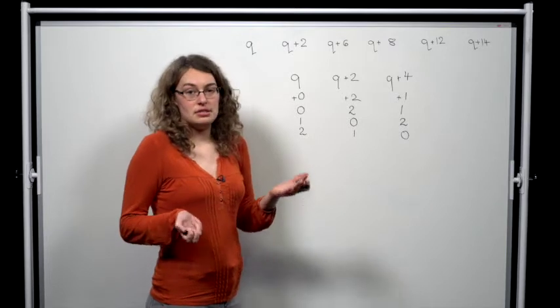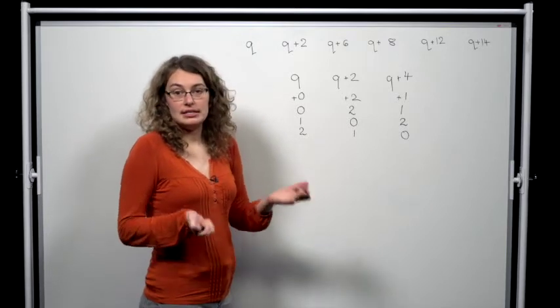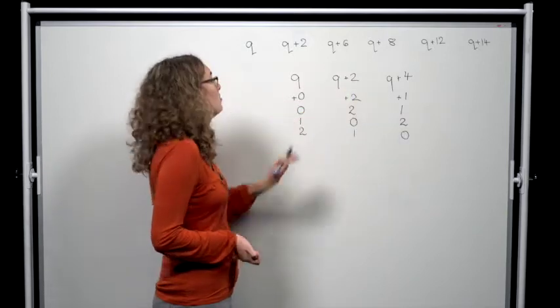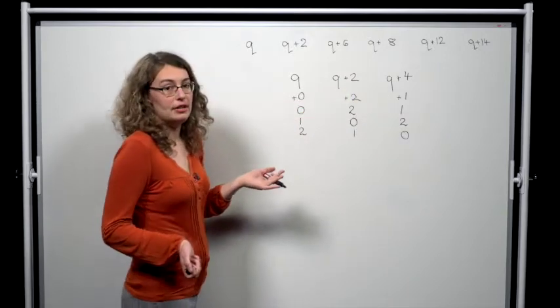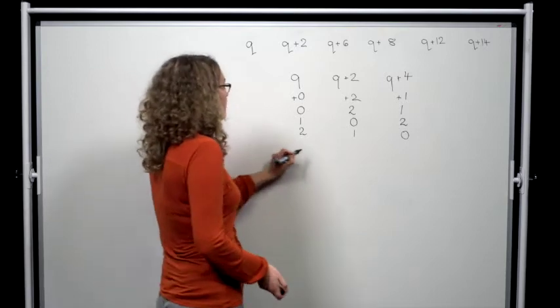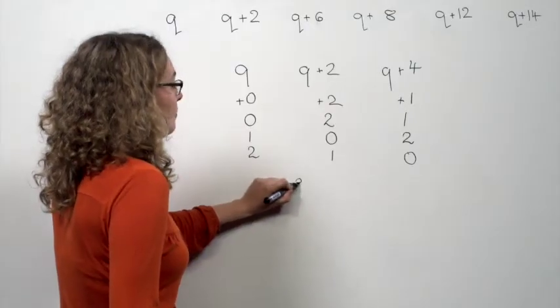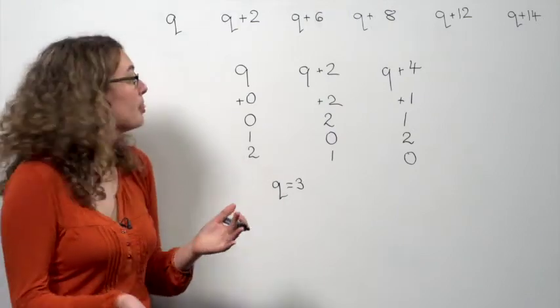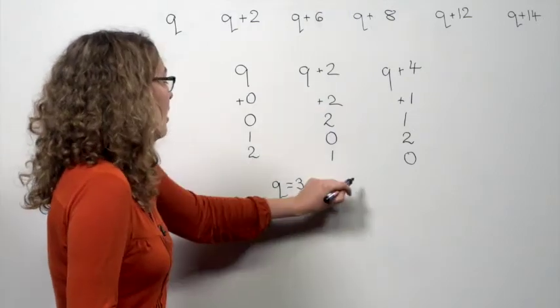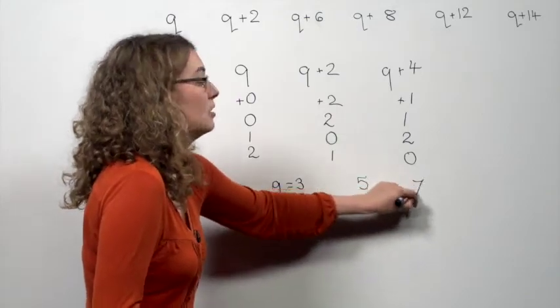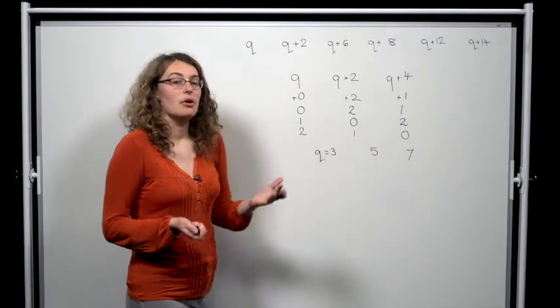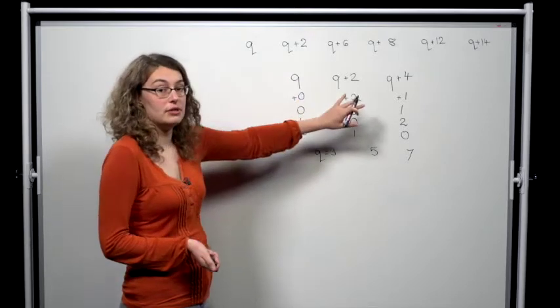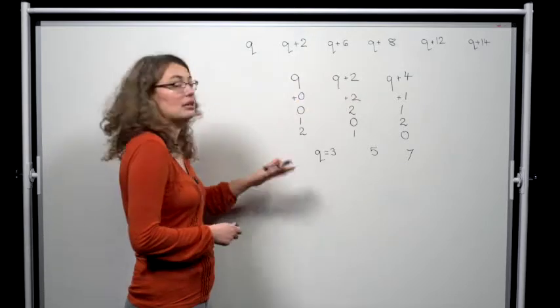Now, the only prime that's a multiple of 3 is 3 itself, so one of these primes must be 3, but the only one of these that can be 3 is q. So we must have q equal to 3. Now, we check that q plus 2 and q plus 4, which give us 5 and 7, are also primes. So, we're done. The only prime such that q, q plus 2 and q plus 4 are all primes, is q equals 3.